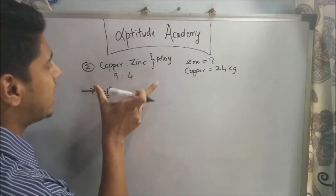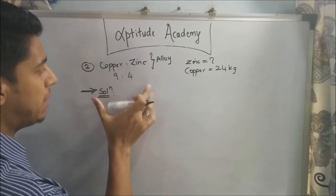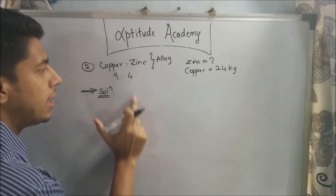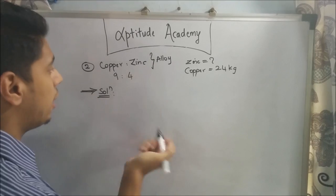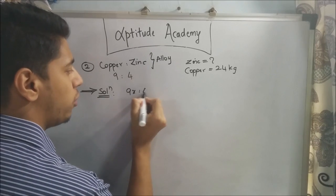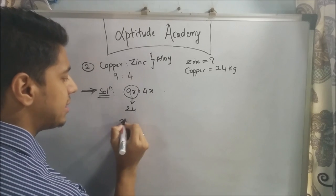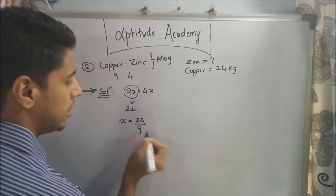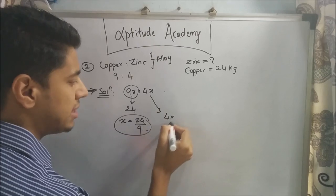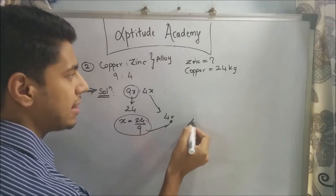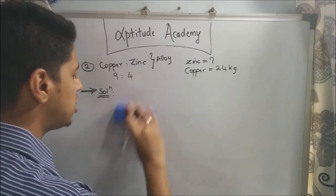For problem 2, there is an alloy of copper and zinc mixed in the ratio 9:4. They ask how much zinc is needed if the copper is 24 kg. Usually you could do this as 9x:4x. Then 9x = 24 kg, so x = 24/9. Zinc is 4x, so multiply 4 by this answer to get the zinc needed.